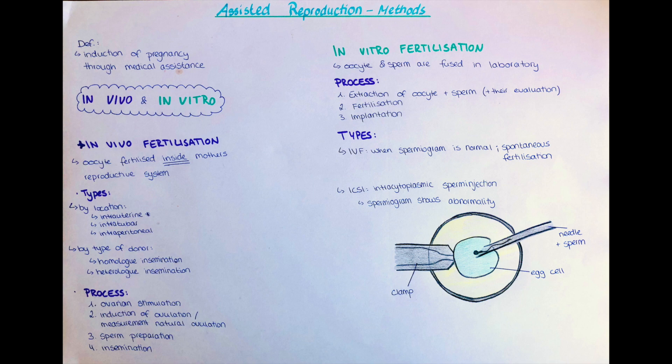The barriers that sperm has to overcome to reach the egg are the following. First, the acidic environment of the vagina. Then, the cervical mucus, which filters immotile and dead sperm. Later on, they will encounter leukocytes, which can in some cases lead to anti-sperm antigen formation, which destroys the sperm. Also, the sperm has to pass through the cervical canal, which is a narrow portion within the cervix.